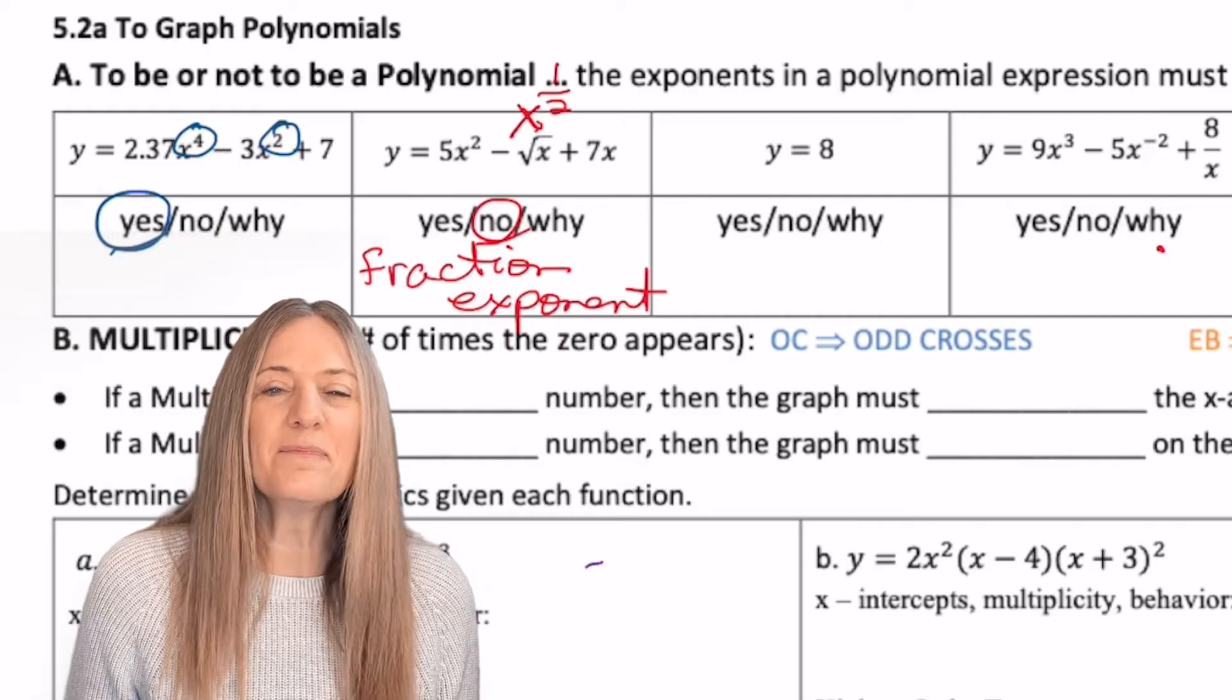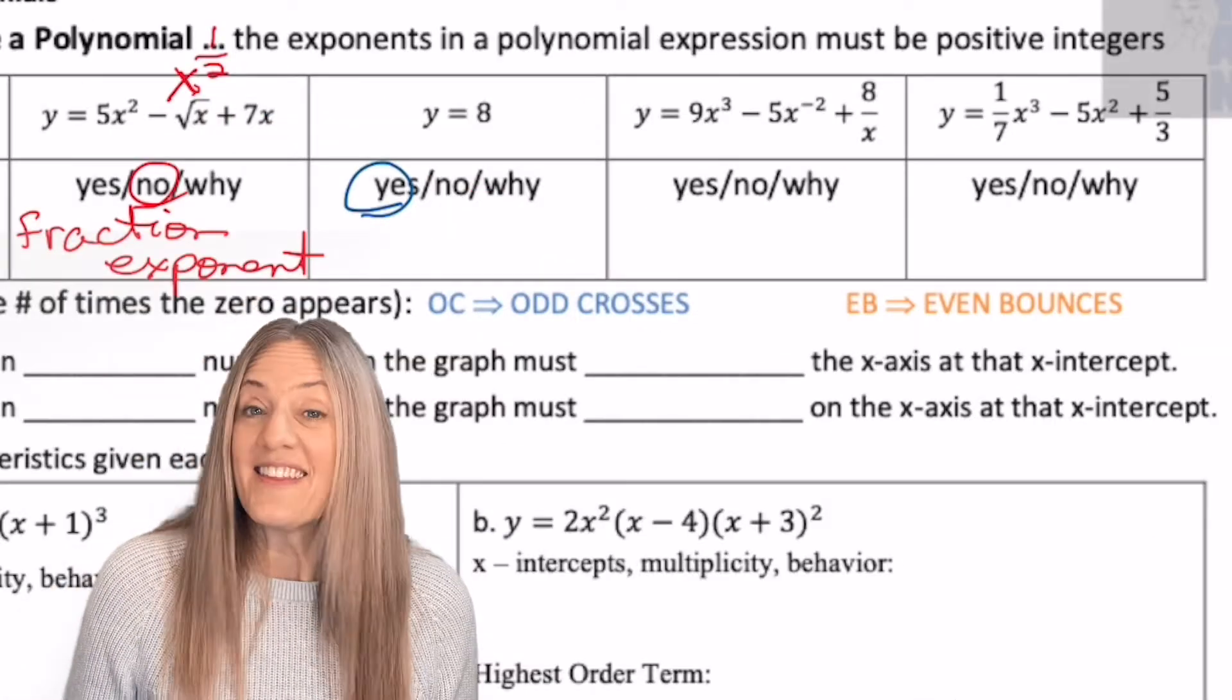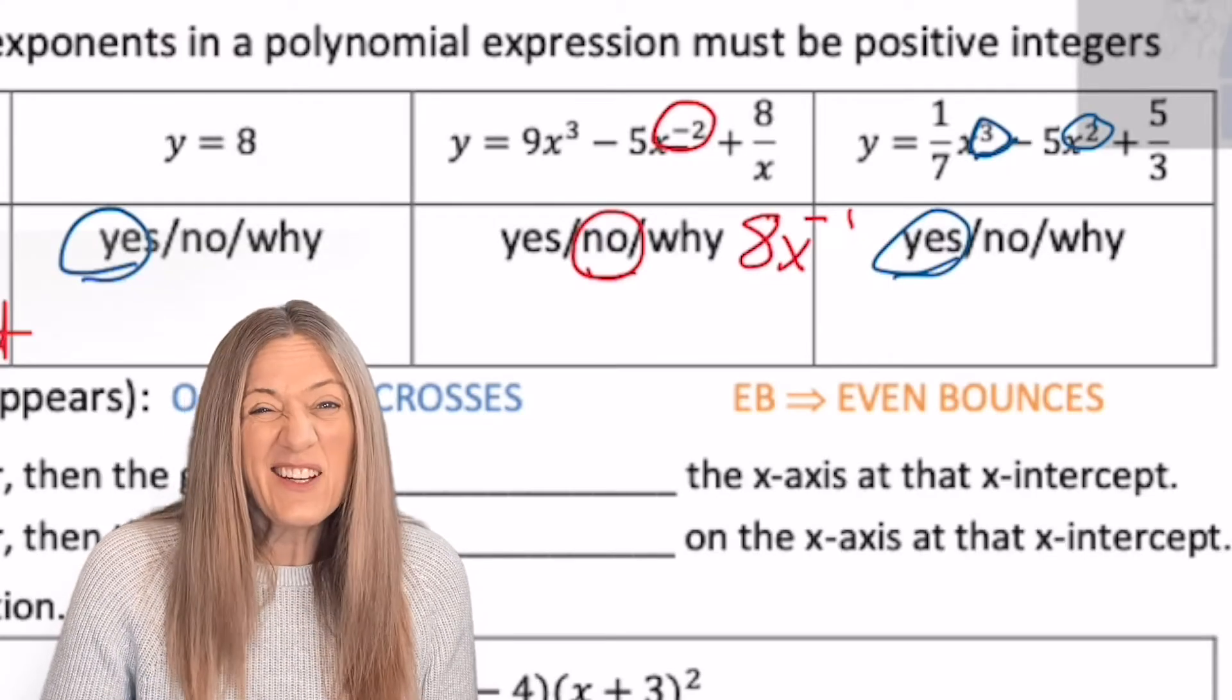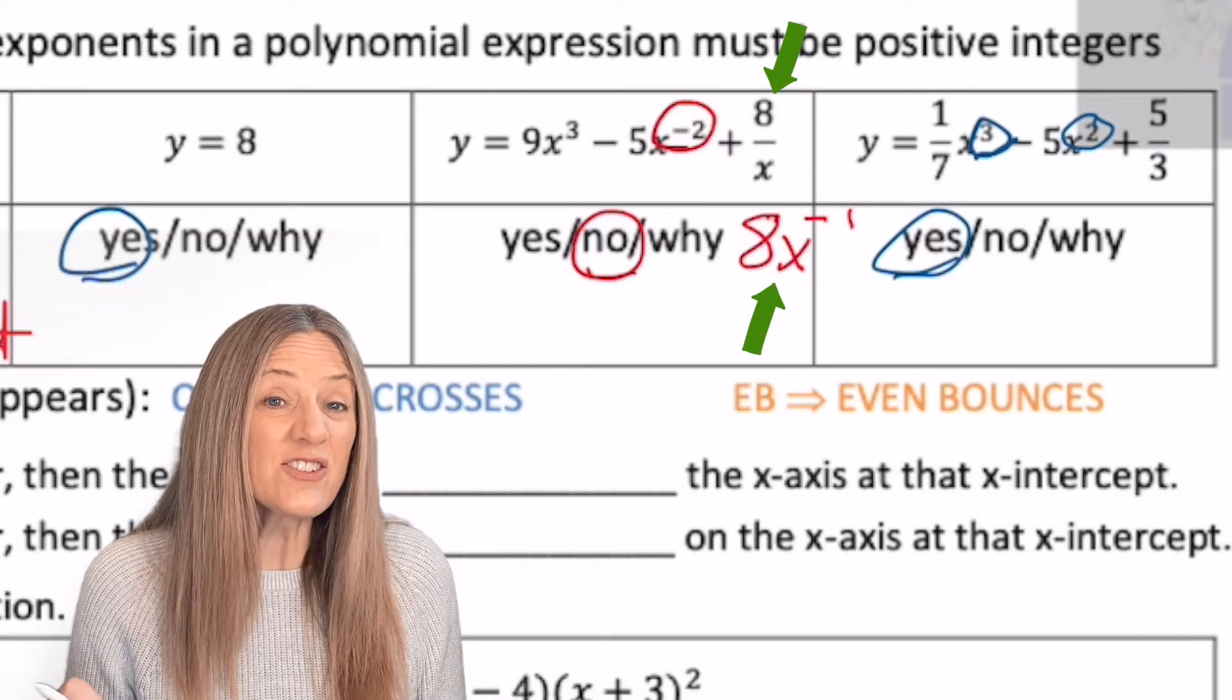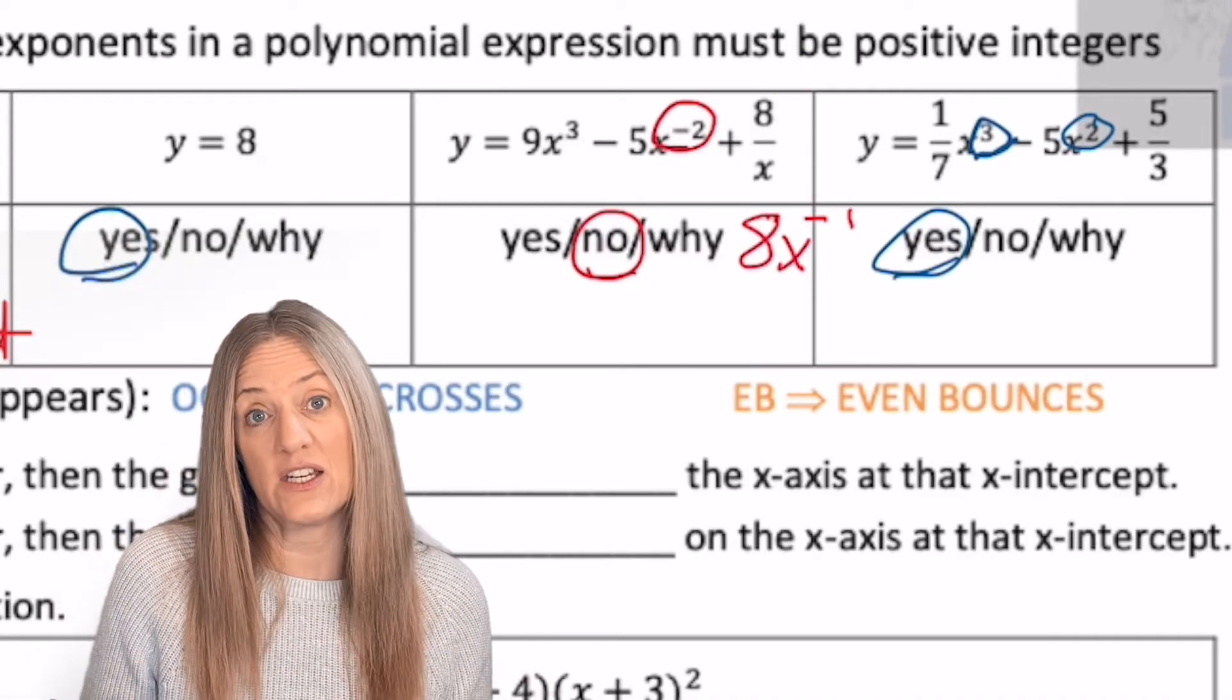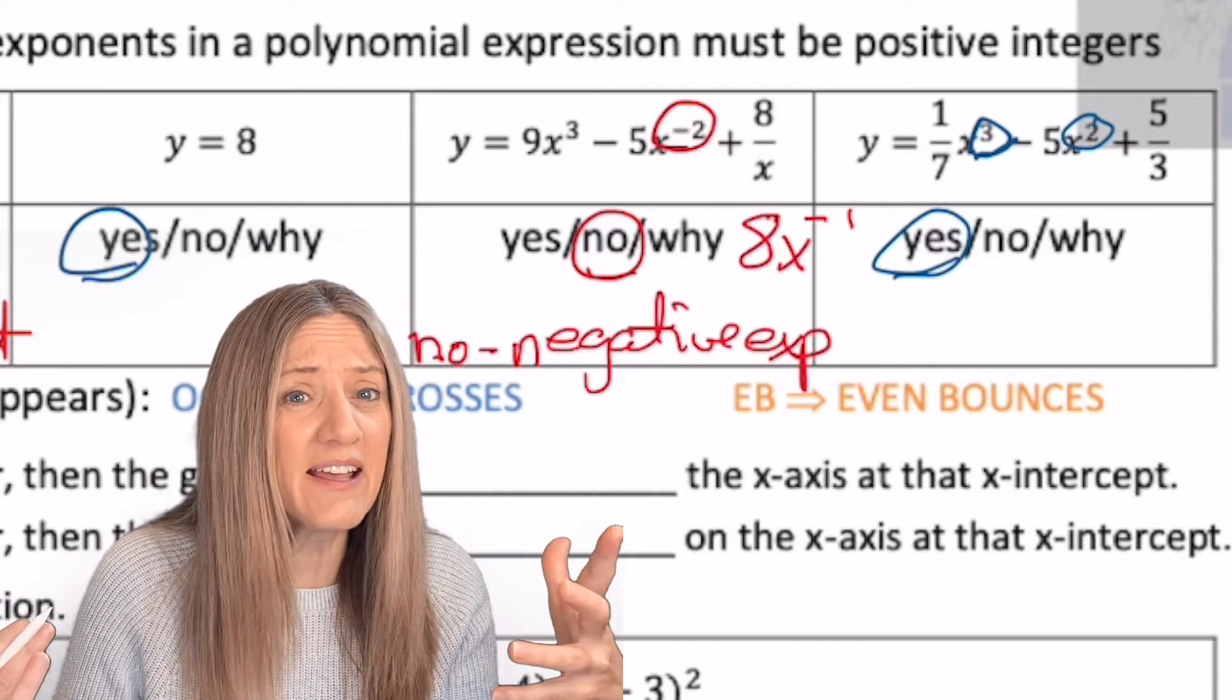Y equals 8? Well, that's a polynomial, because 8x to the 0. Why don't you try the next two and then come back and see how you did. 5x to the negative 2. Well, a negative exponent, not a polynomial. Also, 8 divided by x, that one's not okay either. When you're dividing by x, it actually is 8x to the negative 1. Once again, not a positive integer. So to be a polynomial, it has to have positive integer exponents, and not to be a polynomial is if the exponents are negative or fractions.